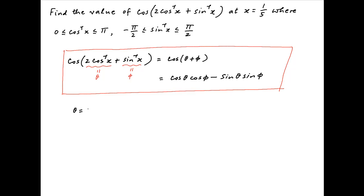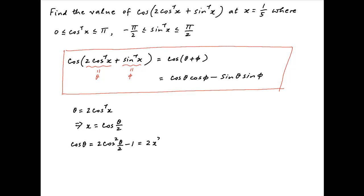Now theta is equal to 2 times cos inverse x as assumed above. Therefore x is equal to cos of theta upon 2. Now cos theta is equal to 2 times cos square of theta upon 2 minus 1, which is therefore equal to 2x squared minus 1.